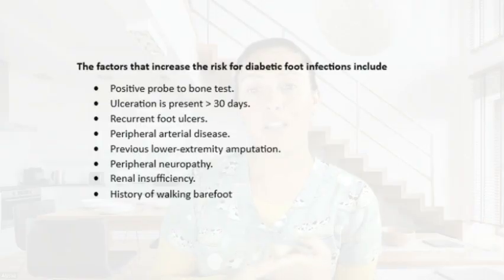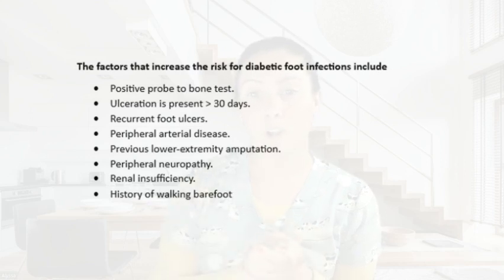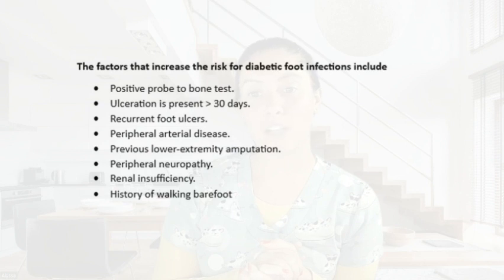Diabetic foot ulcers are the number one complication of diabetes requiring hospitalization. Factors that increase risk of ulceration and infection include: a positive probe-to-bone test, an ulcer over 30 days old, recurrent foot ulcers, peripheral arterial disease, previous lower extremity amputation, peripheral neuropathy, renal insufficiency, and a history of walking barefoot.